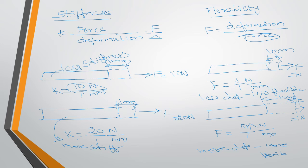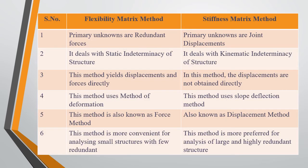Now let us see the differences between the flexibility matrix method and stiffness matrix method. First difference: in the flexibility matrix method, the primary unknowns are redundant forces, and these unknowns are found using the compatibility equation. In the stiffness matrix method, the structure is solved using the equation of equilibrium. Second difference: the flexibility matrix method deals with the static indeterminacy of the structure, while the stiffness matrix method deals with the kinematic indeterminacy.